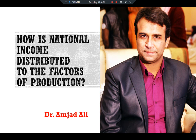Welcome, dear audience, students and scholars. I'm Dr. Amjad Ali. In this video we will learn how national income is distributed to the factors of production. The total output of an economy equals its total income because the factors of production and the production function together determine the total output of goods and services, and they also determine the national income. We will try to develop a model of the economy by discussing how these factor markets work.